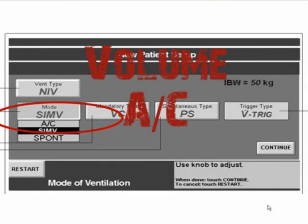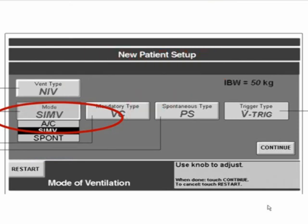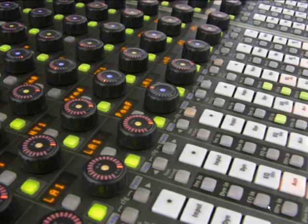Assist control essentially means you dial in a respiratory rate and a tidal volume, and the patient gets at least that no matter what. If they take a spontaneous breath, the machine gives a full machine breath at whatever tidal volume you set. For instance, if you set 10 breaths per minute and 500 cc's per breath: an unconscious patient gets exactly those 10 breaths and 500 cc's. If the patient's waking up and over-breathing the vent, each extra breath they initiate still gets the full 500 cc's — the patient won't be doing much work. That's assist control.